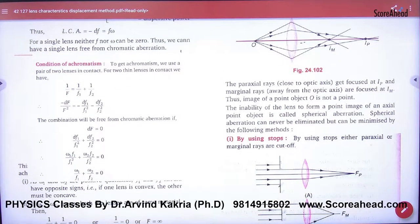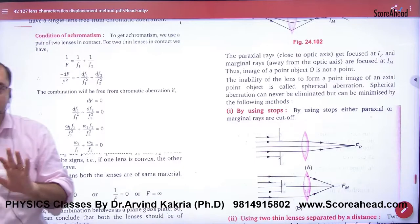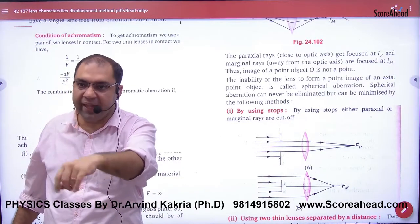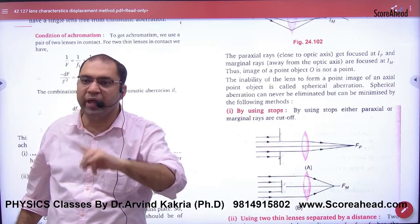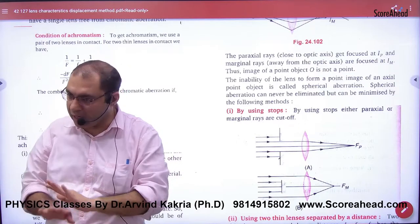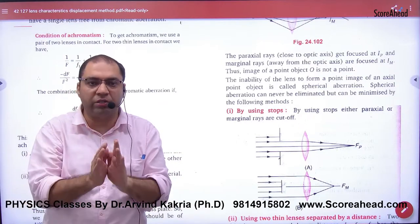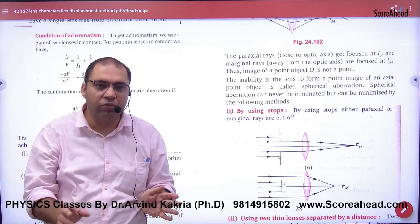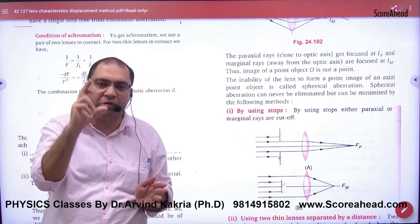Conditions for achromatism: Chromatism means defect. Achromatism means that this defect doesn't come. So if I want that this doesn't come, light shouldn't get divided.